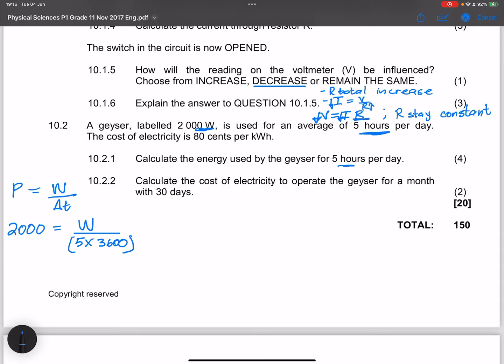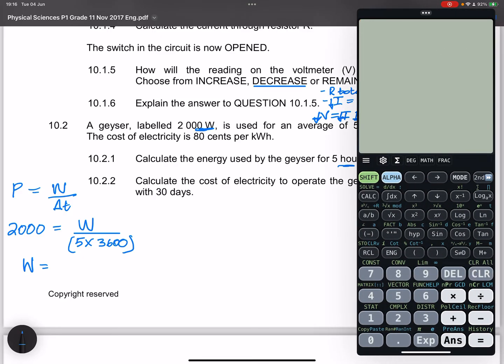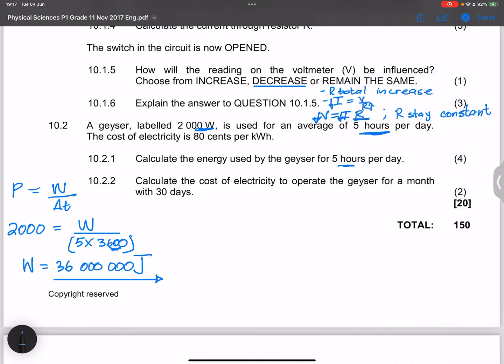Right, so in this case, that's 3,600, which is going to be the total amount of seconds that we have in five hours. So energy is 5 times 3,600 times 2,000. So we'll get the amount of energy there. So remember, we've got 3,600 seconds in one hour, but we had five hours. So this would be 36 million. Yeah, so that would be the amount of energy that we would be using in five hours.